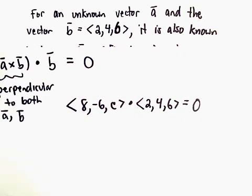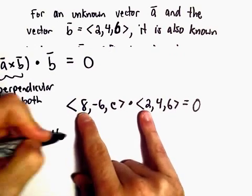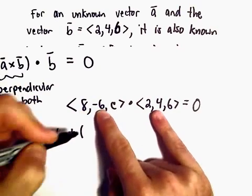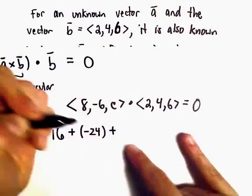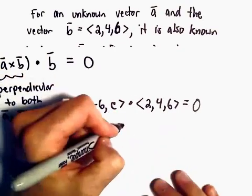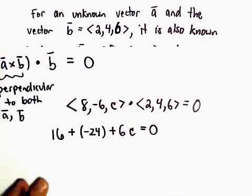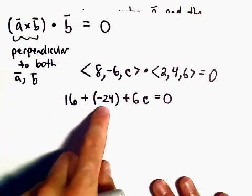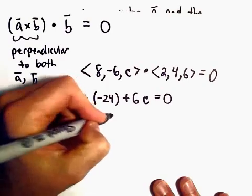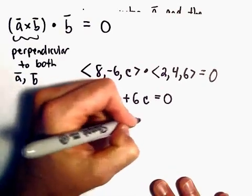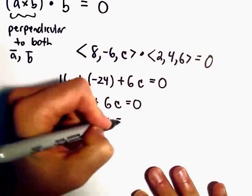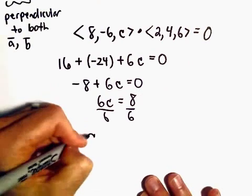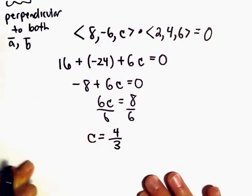What we can do is multiply respective components. So 8 times 2 will be 16, plus negative 6 times 4, which will be negative 24, plus c times 6, which will be 6c. And now we can simply solve this for c. So 16 minus 24 will be negative 8, plus 6c, that equals 0. We can add the 8 over, divide both sides by 6, and that tells us that the value of c would have to equal 4 thirds.